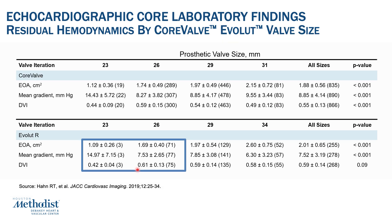In contrast, this chart shows the similar numbers for the self-expandable Evolute valve. The gradients are lower, in the single digits, especially for the 26 valve, with DVIs in the 0.6 range. The hemodynamics have been shown to be superior with the self-expandable Evolute platform compared to the balloon expandable platform, especially in patients with small annulus.